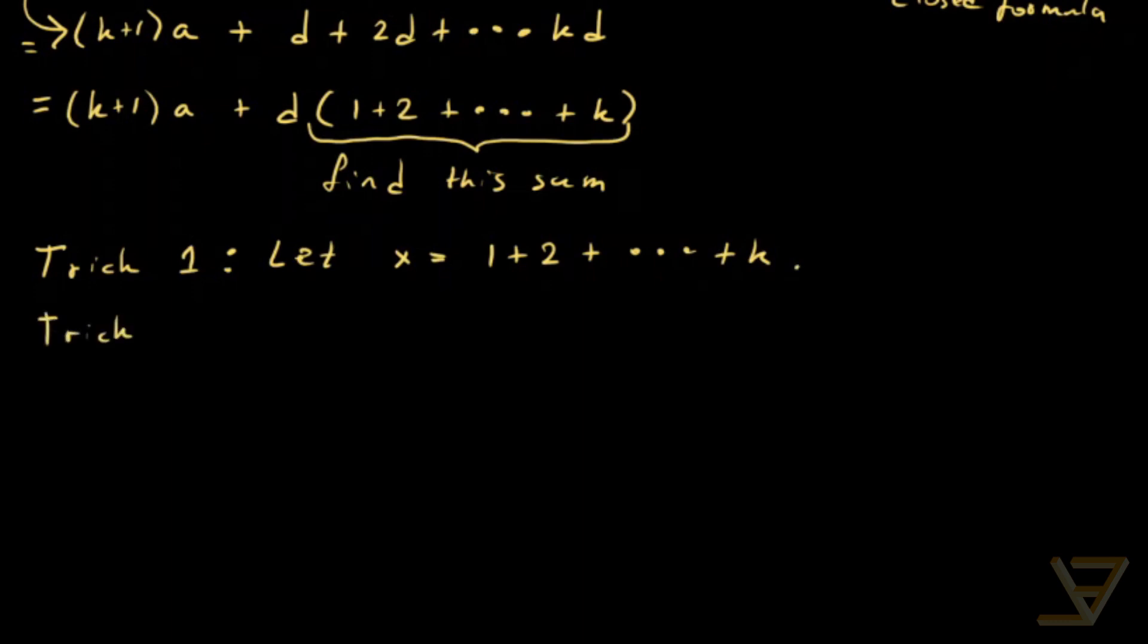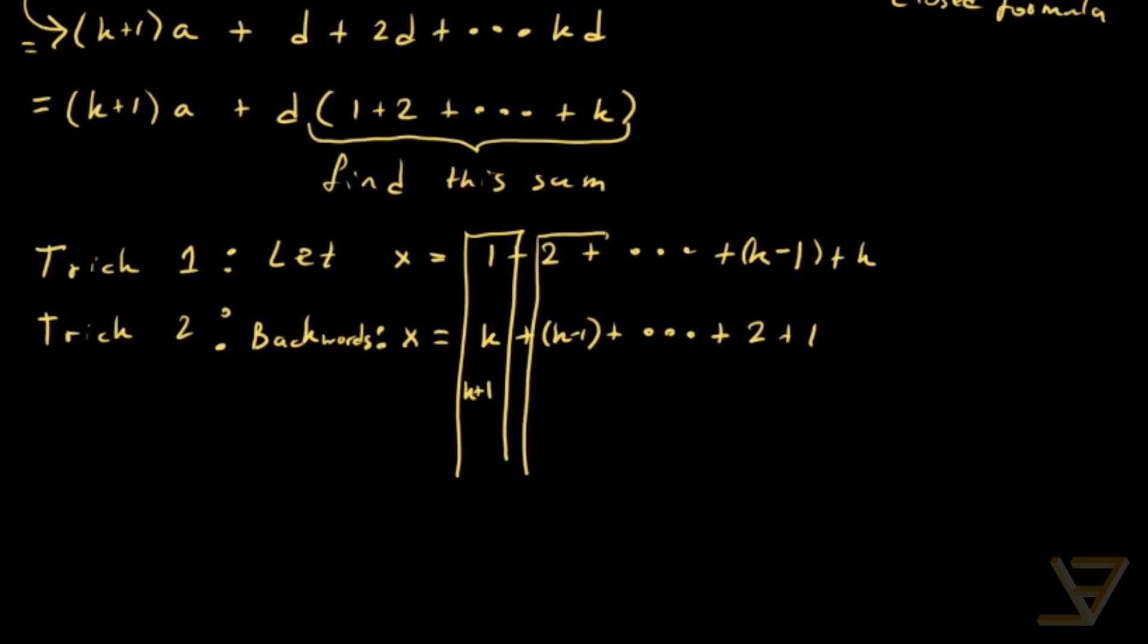And trick 2 is write backwards. So X is also equal to K plus K minus 1. So we're writing it in the other direction, all the way through to 2 plus 1. And over here let's write it as K minus 1 plus K, so that we have a few extra terms to experiment with. What I want you to notice is what happens to corresponding terms. 1 plus K is K plus 1. 2 plus K minus 1 is also K plus 1. And if we keep going like that, we find that corresponding terms sum to K plus 1.